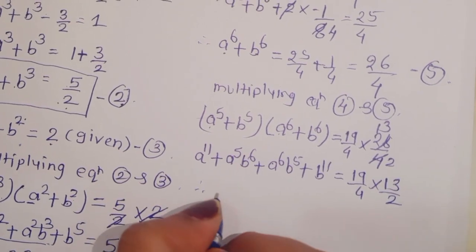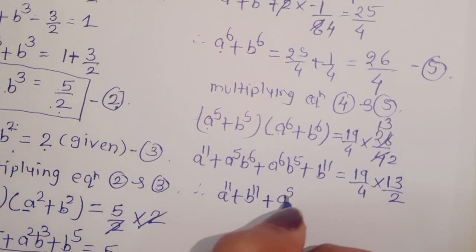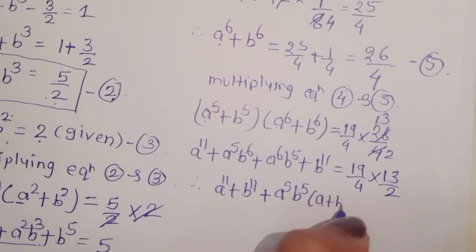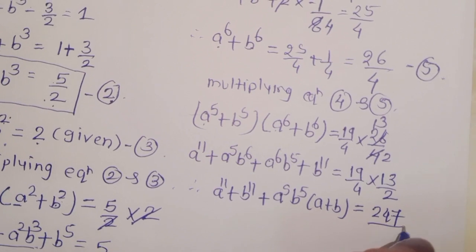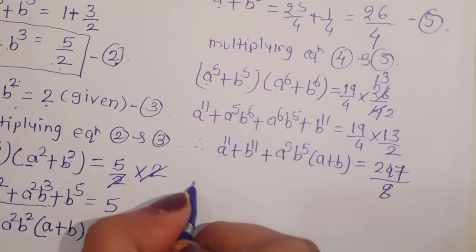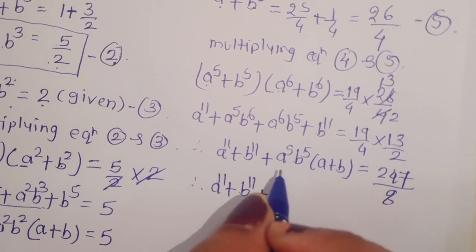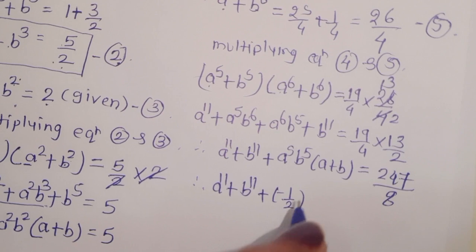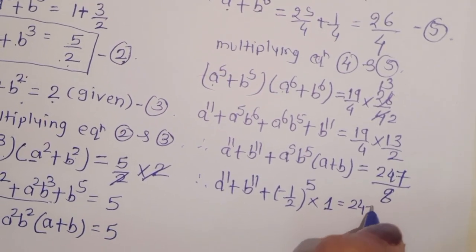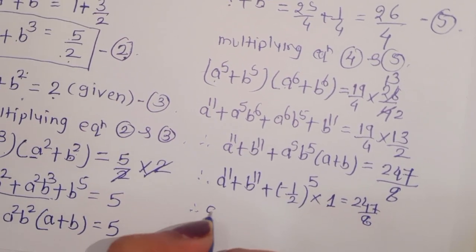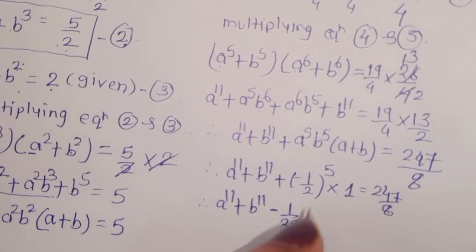We can rewrite this as a power 11 plus b power 11 plus a power 5 b power 5 into a plus b equals 247 upon 8. Substituting: a power 11 plus b power 11 plus ab power 5 into a plus b, where ab is minus 1 upon 2 and a plus b is 1, gives a power 11 plus b power 11 plus minus 1 upon 2 power 5 into 1 equals 247 upon 8.